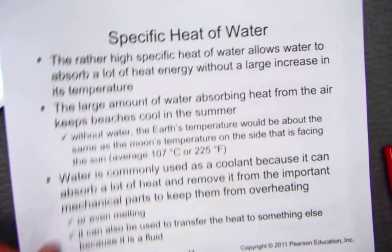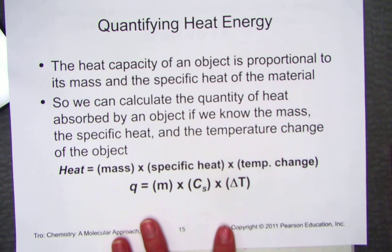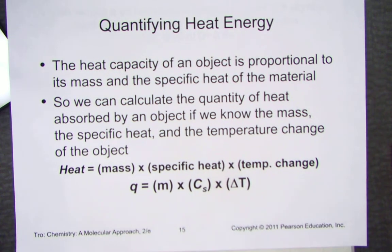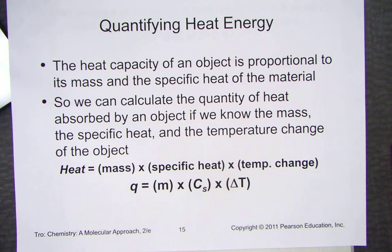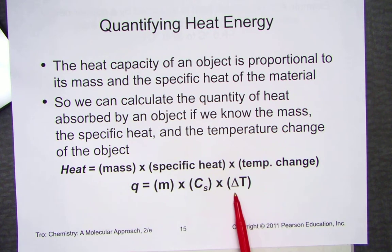Quantifying heat energy — this is a practice calculation. It should look somewhat familiar from last quarter. Remember, Q = MC delta T, where M stands for the mass, C is the specific heat constant, and delta T is the change in temperature. Recall that the triangle symbol stands for the change in temperature.